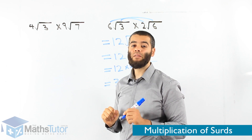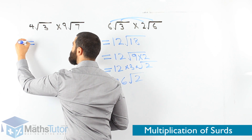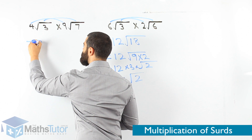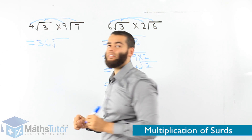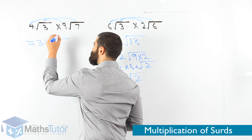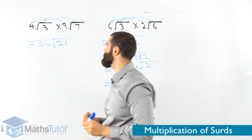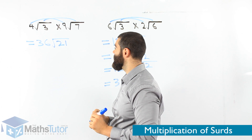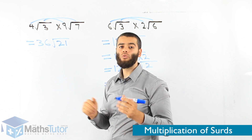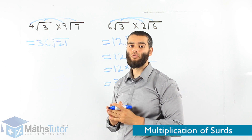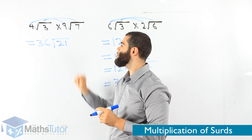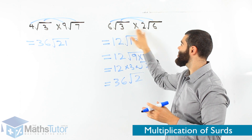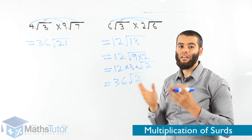Next one: 4 root 3 times 9 root 7. 4 times 9 is 36, and root 3 times root 7 is root 21, since 3 times 7 is 21. Our answer is 36 root 21. Can we simplify? We look carefully — there are no two numbers that multiply to give 21 where one of them square roots. So 36 root 21 is the final answer. Now we know how to multiply square roots: multiply the whole numbers if there are whole numbers, and multiply the roots together. It's that simple.